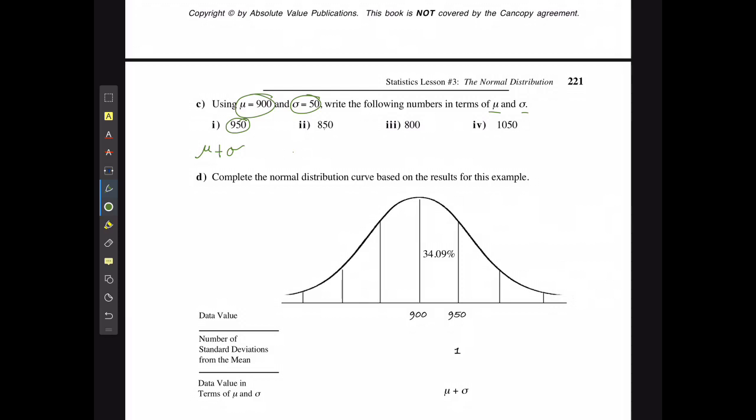If this was 50 less than 900, this would be mu minus two sigmas. And if this is 150 more than 900, this would be mu plus three sigmas or three standard deviations.